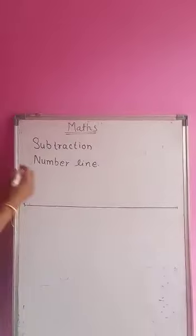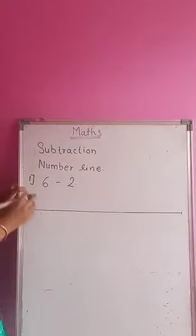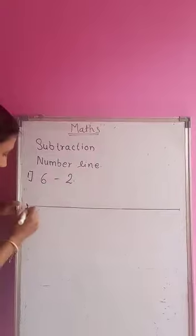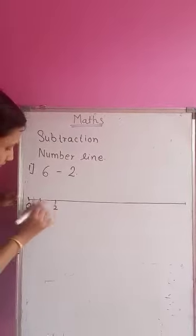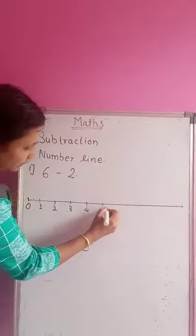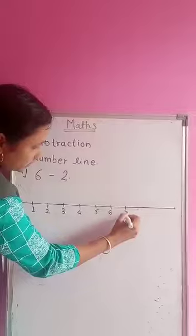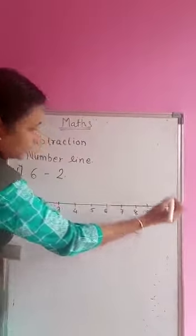First sum is 6 minus 2. Let's solve this sum with the help of number line. Let's draw a number line starting from 0, 1, 2, 3, 4, 5, 6, 7, 8, 9, and 10.